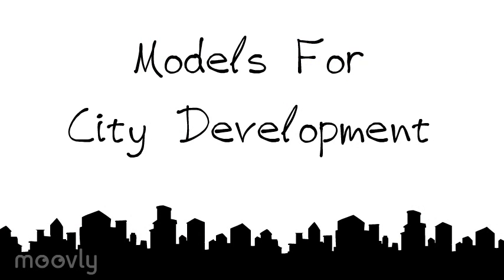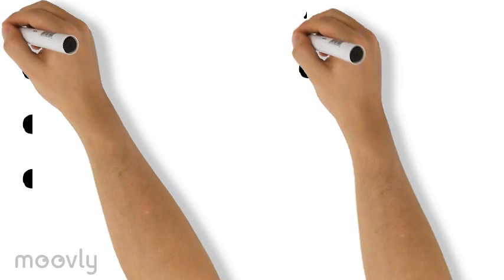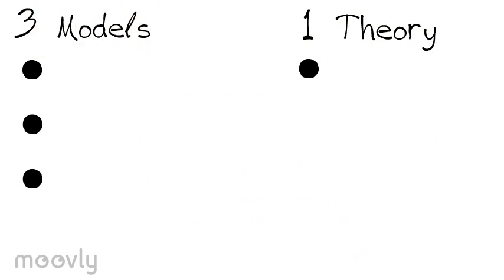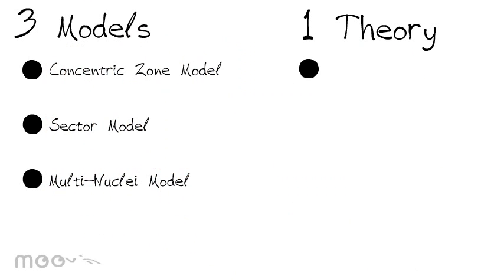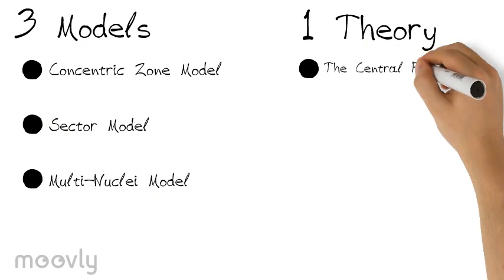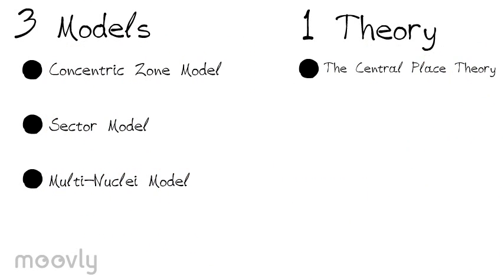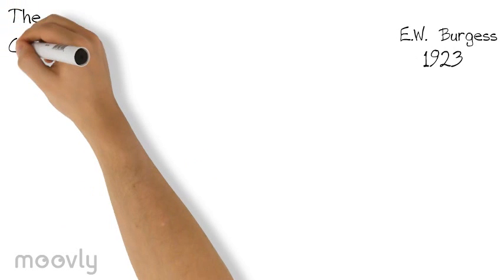Models for city development. For the models, there are three major models on how cities are shaped. They are the concentric zone model, the sector model, and the multi-nuclei model for American cities. The central place theory explains how a city works with goods and services.